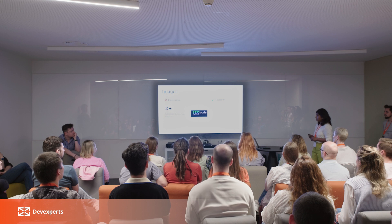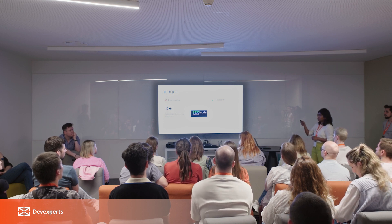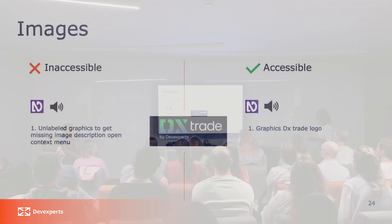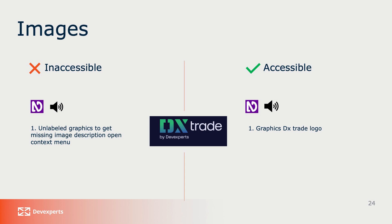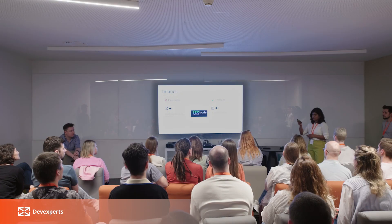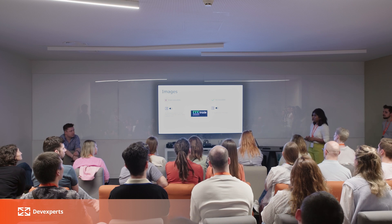Another example is images. If this image is inaccessible and no label is provided, the screen reader will announce: 'Unlabeled graphic. To get missing image descriptions, open the context menu.' The screen reader is just announcing 'unlabeled graphic.' Browsers have a feature to auto-detect image descriptions, but it is not always correct. If you provide the alternative text, it will announce: 'Graphic, DxTrade logo.' — 'graphic' is the role and 'DxTrade logo' is the label. We must make sure that informative images have alternative text provided. If images are used only for decoration, we must ensure the screen reader is not reading them.